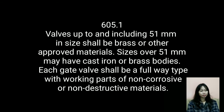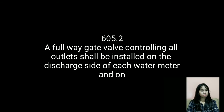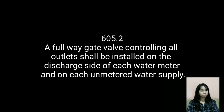In Section 605, valves up to and including 51 millimeters in size shall be brass or other approved materials. Sizes over 51 millimeters may have cast iron or brass. Each gate valve shall be a full-way type with working parts of non-corrosive or non-destructive materials.